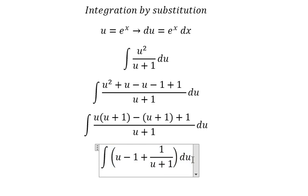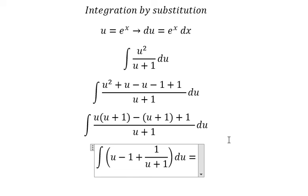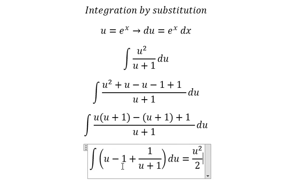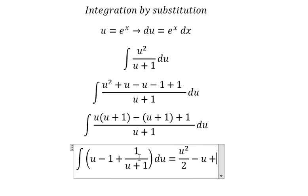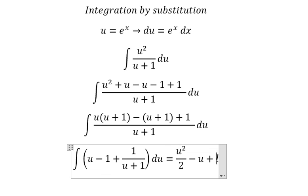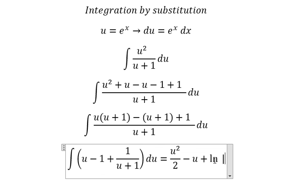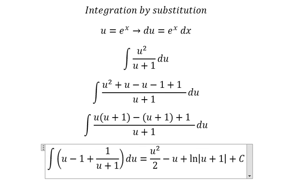Now the integration of u we have u square over two, the integration of number one we have u. The integration of this one we have ln of the absolute value of u plus one and we add c.